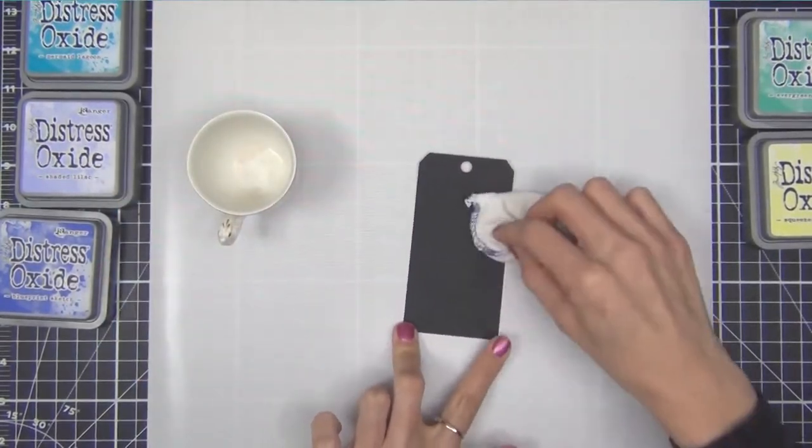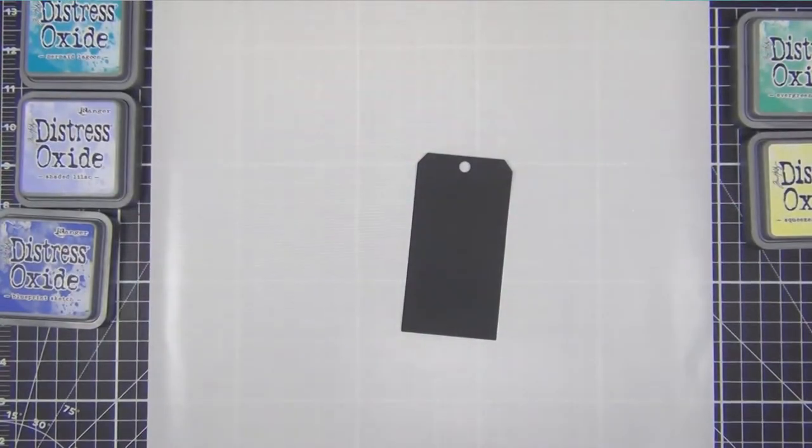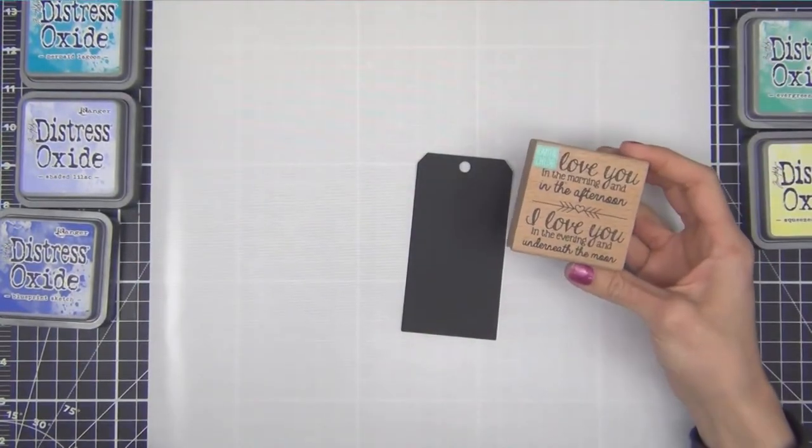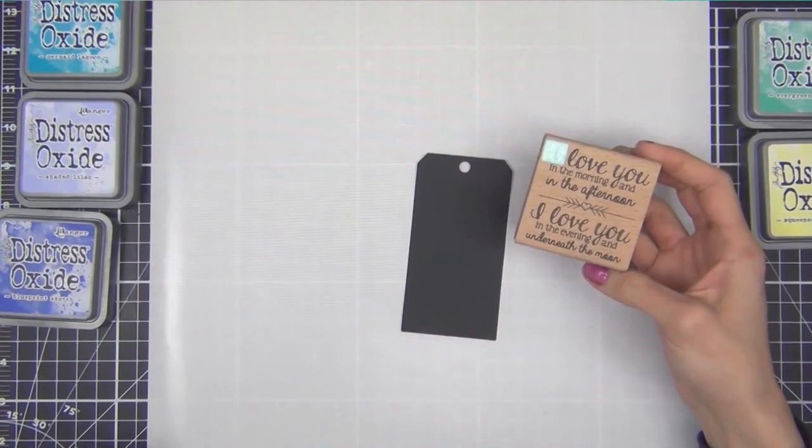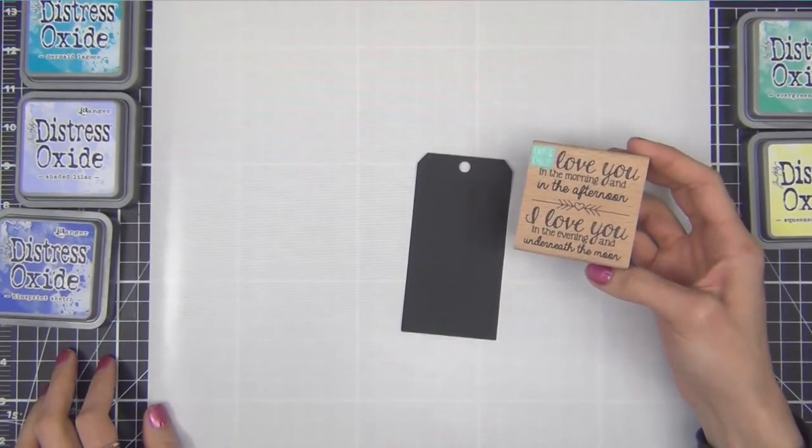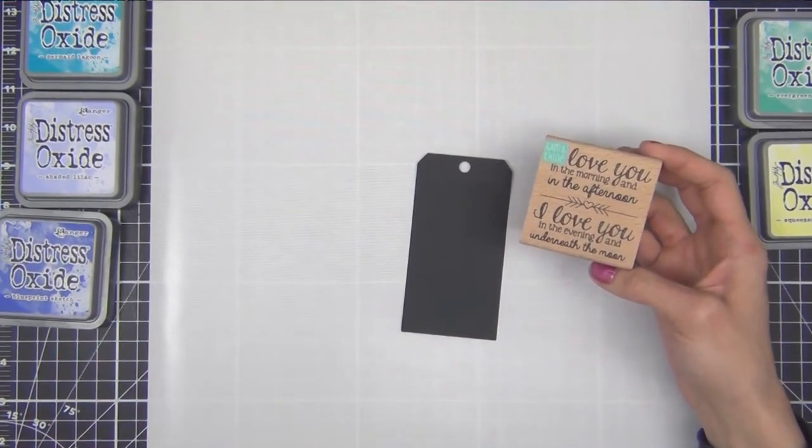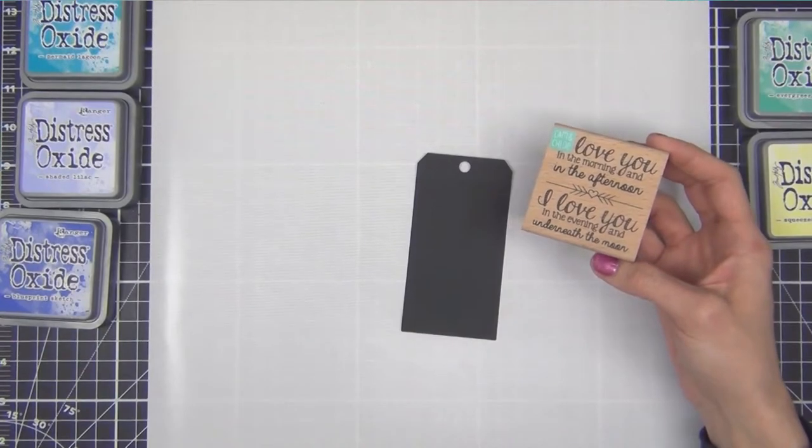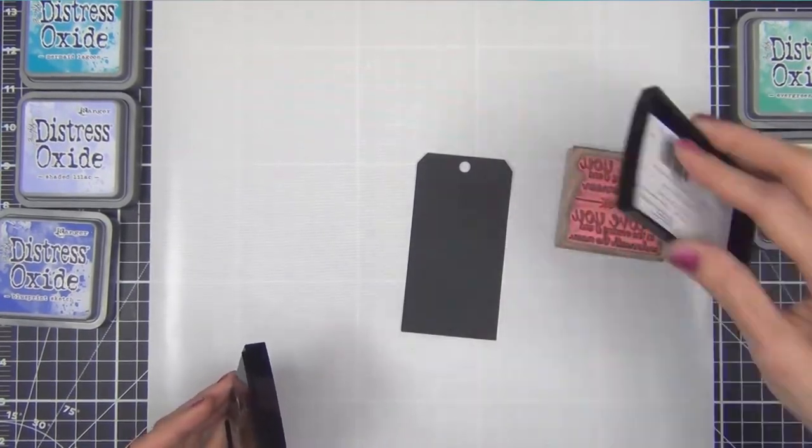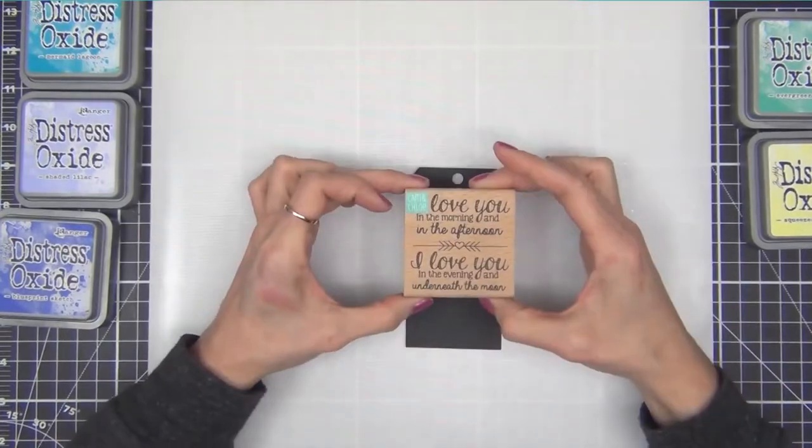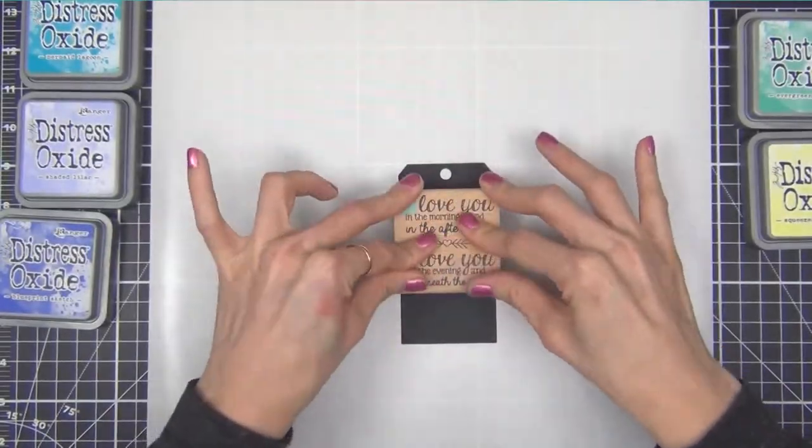Here I'm taking a tag that I die cut from black cardstock and covering it with my anti-static powder bag because I want to white heat emboss this really sweet sentiment. This is the Cam and Chloe collection from Hampton Art but I don't know the name of the stamp. I got this for I think five dollars at Joann's and I really love it. I get a great impression every time.